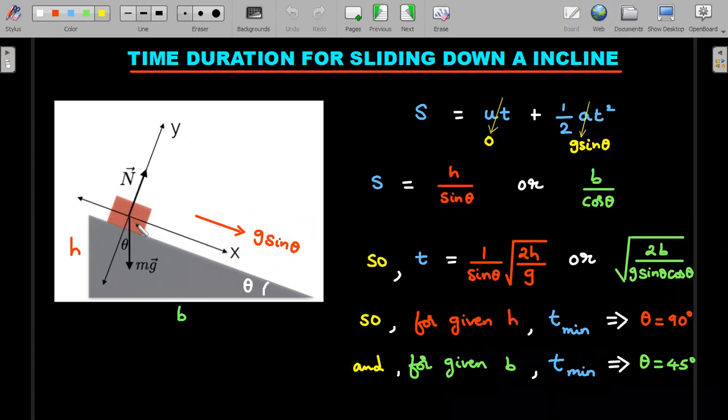We all know once we consider a smooth inclined plane, the acceleration along the inclined plane comes out to be g sinθ after you write Newton's laws of motion. If I consider the inclined plane to be fixed and height is h and base value is b and angle of inclination is θ, then you can apply s = ut + ½at² along the incline.